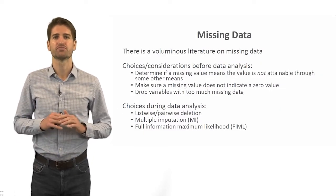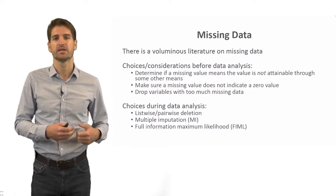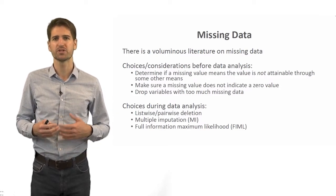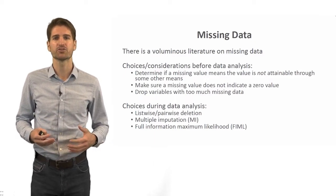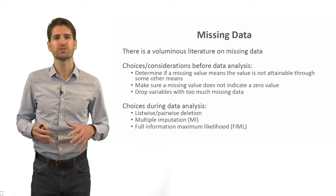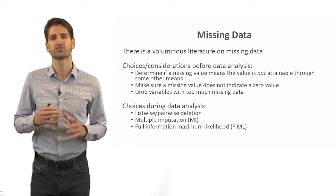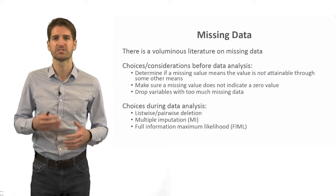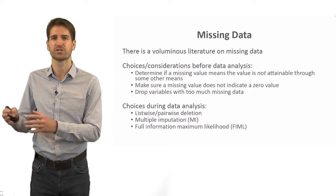There is a voluminous literature on missing data, and interestingly this has really cropped up in the psychology literature, specifically the psych methods and statistics literature. Our thinking on missing data has evolved quite a bit over the past two to three decades. We can think about addressing it before data analysis and then actually during the data analysis process. If you come across missing observations or values for certain variables, you should consider these things before engaging in the analysis.